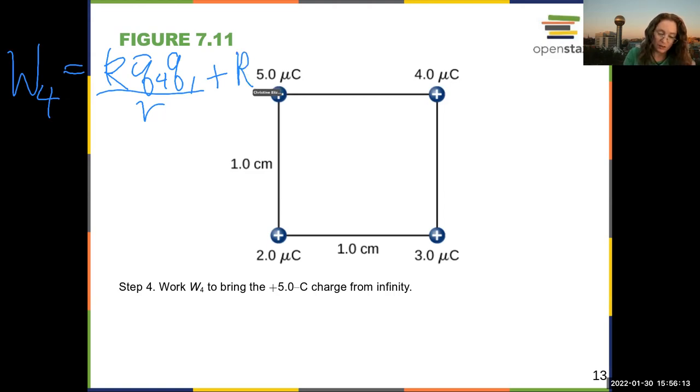Oh, there we go. KQ₄Q₂ over R, and it should be 4142, KQ₄Q₃ over R₄₃.